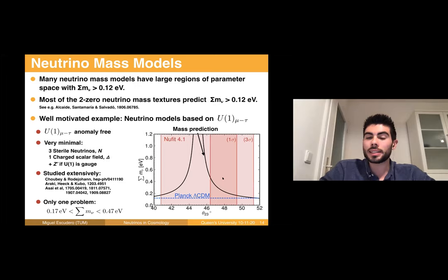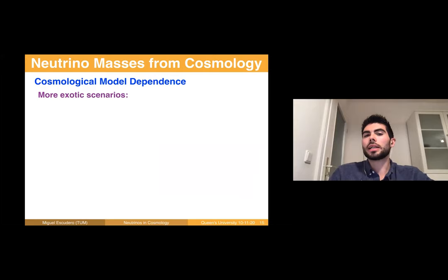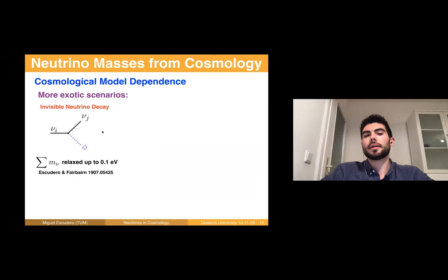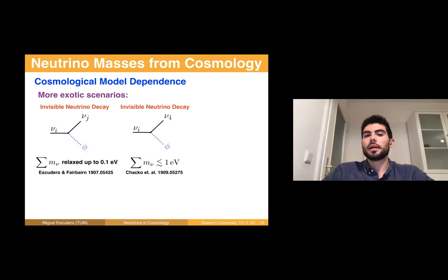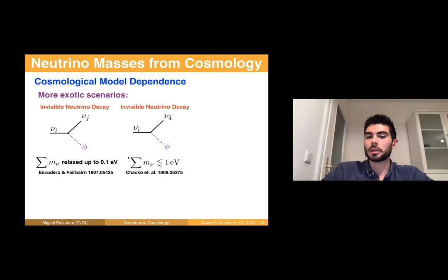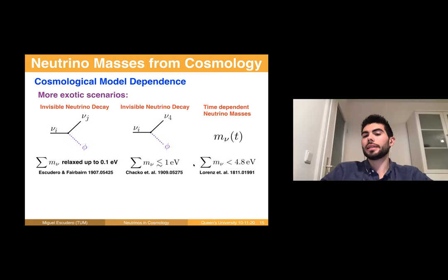To substantially ameliorate this bound, one can move to more exotic scenarios. For example, if neutrinos decay on cosmological timescales with a massive neutrino decaying into a lighter massive neutrino emitting a massless state, the bound can be relaxed up to about 0.1 eV. If however the massive neutrino decays into a fourth massless neutrino plus a very light scalar or Z-prime, the bound can be ameliorated up to 1 eV — a significant relaxation. Finally, if neutrino masses are time-dependent, the bound can be relaxed to the level of 5 eV.